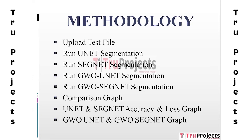The next module is Run GWO-SegNet Segmentation. Similar to the previous module, this applies the GWO algorithm to optimize the SegNet model's parameters and enhance its segmentation accuracy on the chest X-ray data. The Comparison Graph module presents a visual representation of the segmentation performance of the different models, making it easier to compare their strengths and weaknesses.